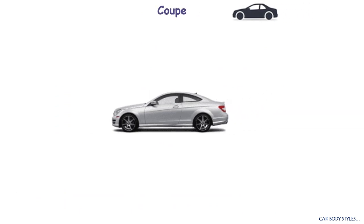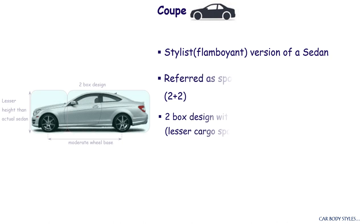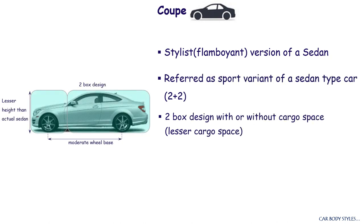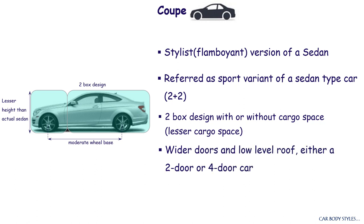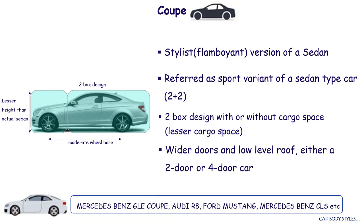Coupe. Coupe is a flamboyant version of a sedan type car, often referred to as 2+2. It is also a two-box design car, often addressed as the sport variant of a sedan. These cars comprise wider designed doors with a lower roof. Coupes are either two-door or four-door cars with a fixed low-level roof, and they have a small seating area at the rear. Common examples of coupe category cars are Mercedes-Benz GLE Coupe, Audi R8, Ford Mustang, and Mercedes-Benz CLS.